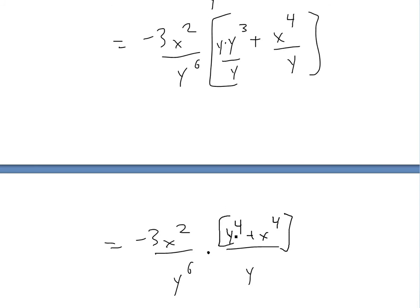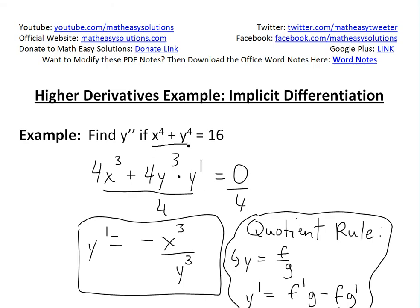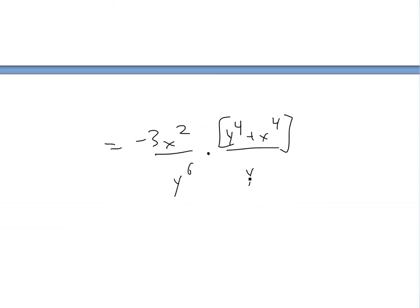This is the really clever part: y^4 + x^4. But we already know what that equals to, that has to equal to 16 from what we're given. And then this y goes over to this side, so we get now -3x^2 times this by 16 over y^7.